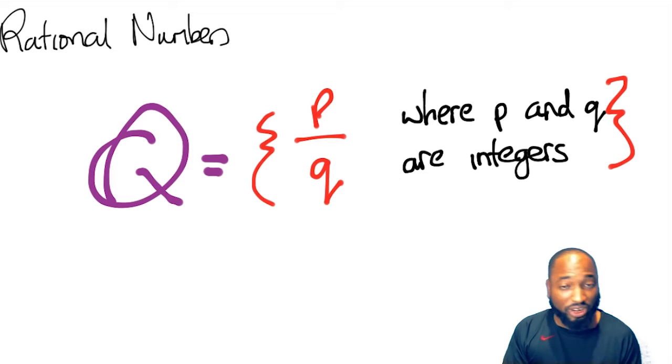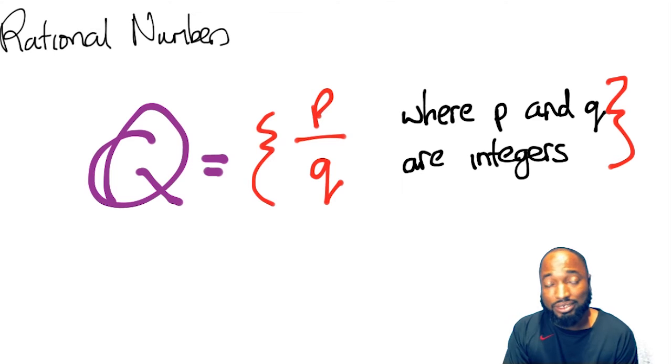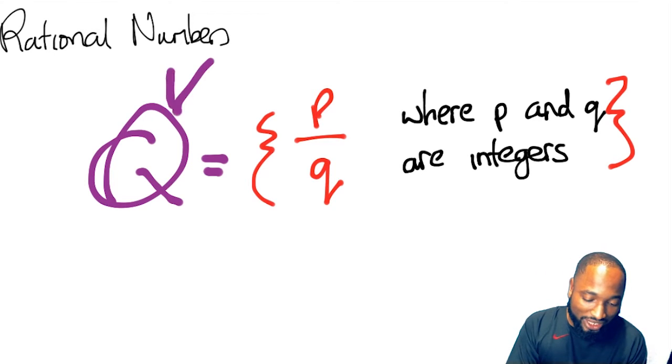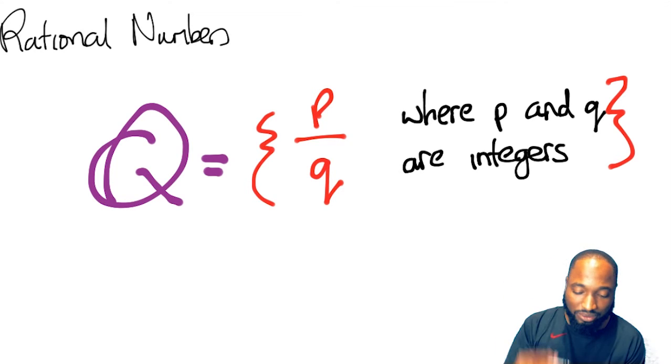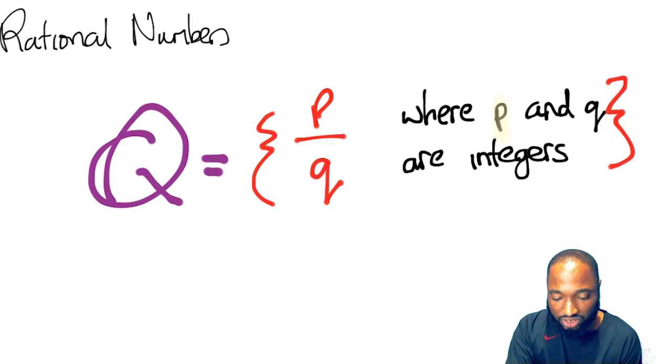Integers include the negative numbers. What about rational numbers? Rational numbers are expressed in this unique way when we say P over Q—like a fraction. P over Q represents a fraction. Remember this Q? You can think of quotient, meaning division. P and Q, the thing with P and Q is that they are integers.